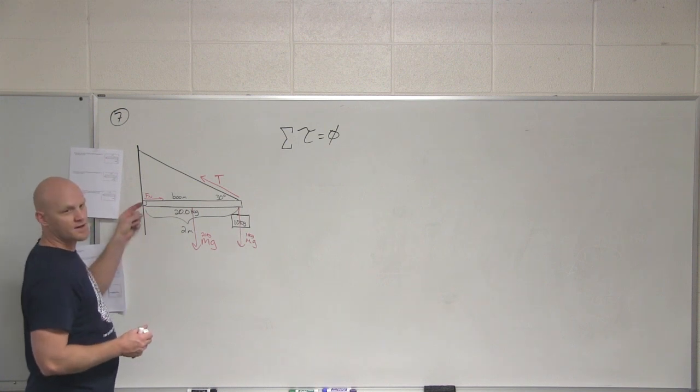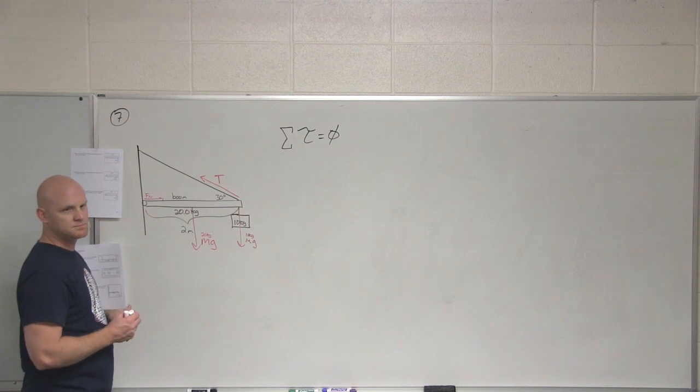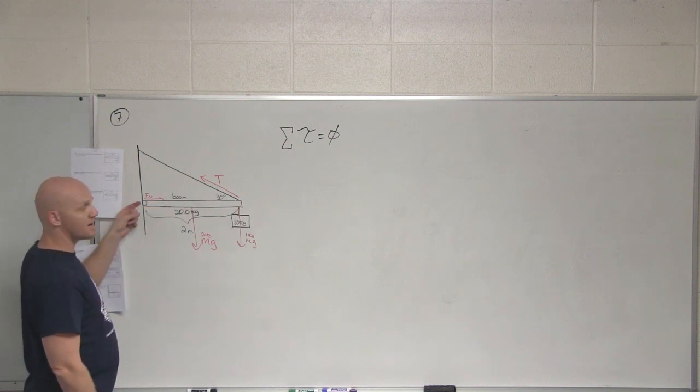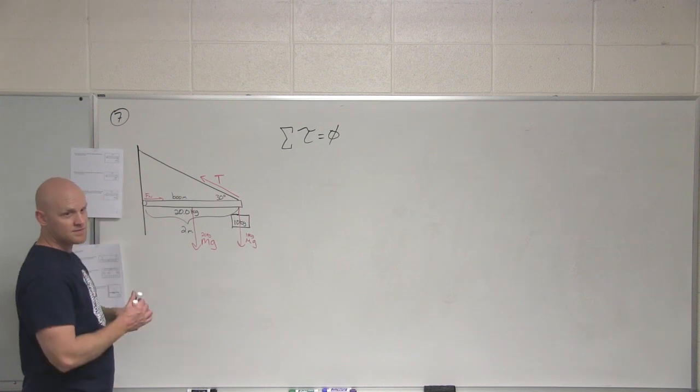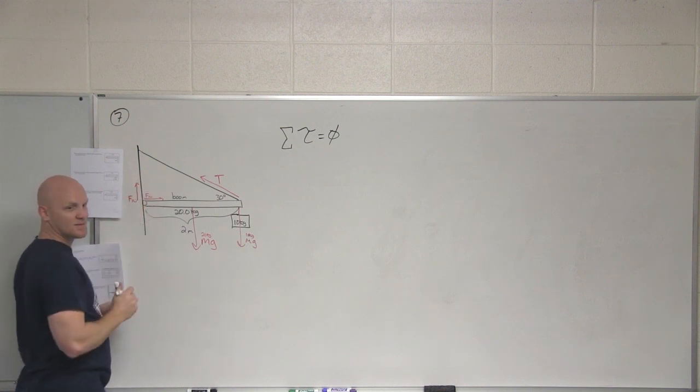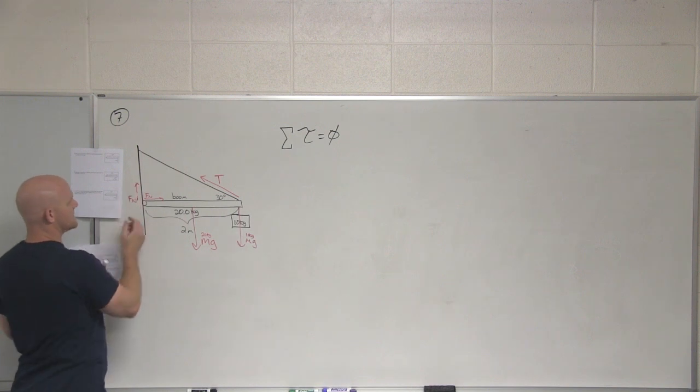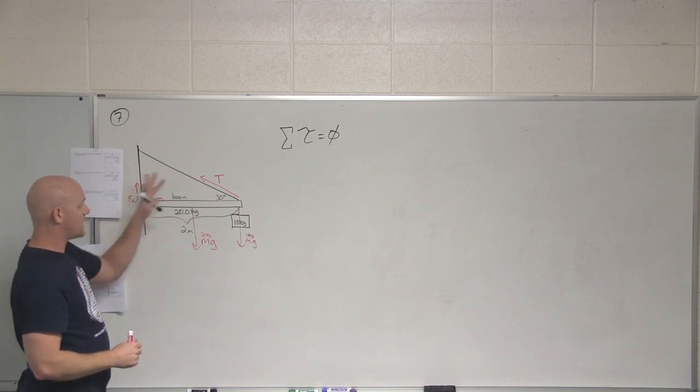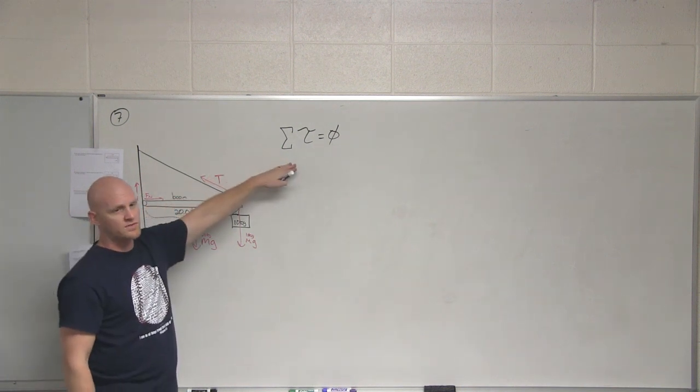Think about this hinge right here. If this hinge is not somehow connected to the wall, what would happen to this boom? It would fall down. I'm assuming they're not going to rely on friction to hold that in place. So technically, if that hinge is fastened to the wall, then there's also a normal force pointing up as well. The boom is attached to that hinge and it rests on that hinge, so there's an upward normal force as well.